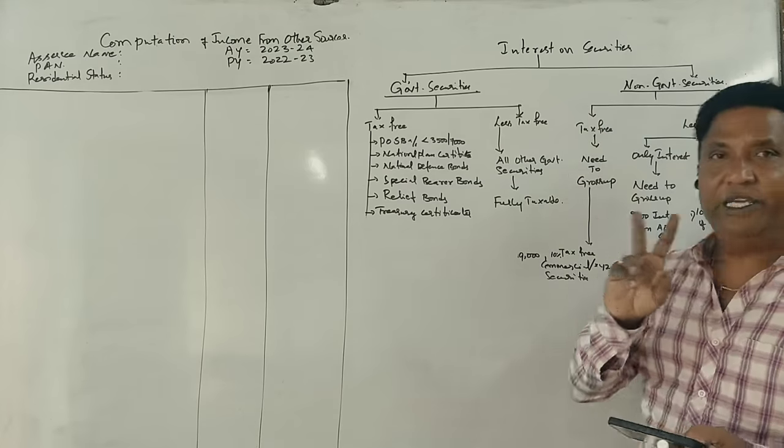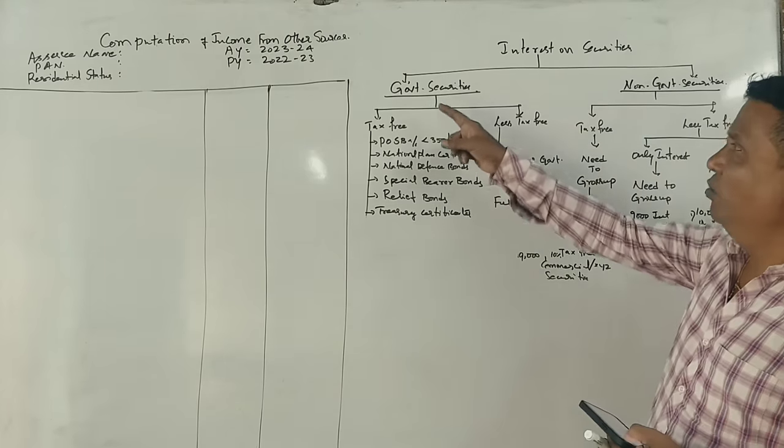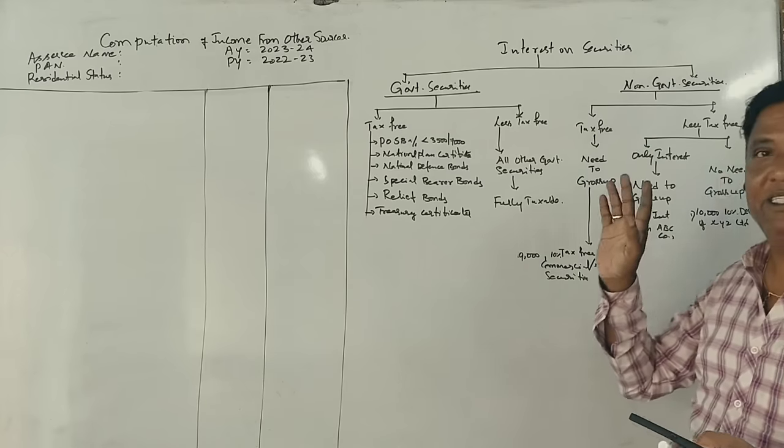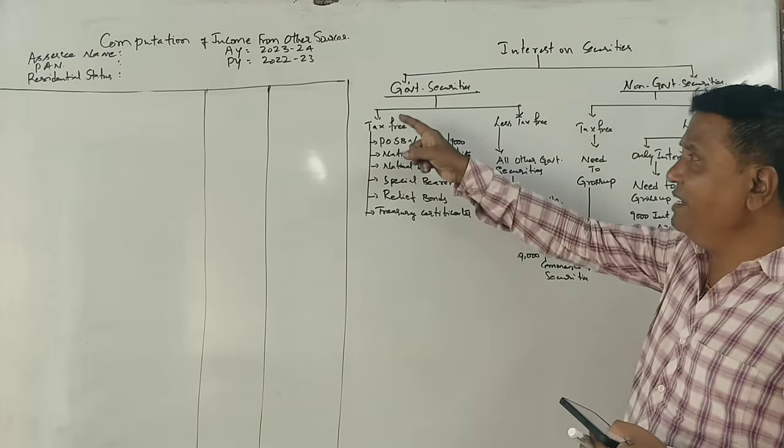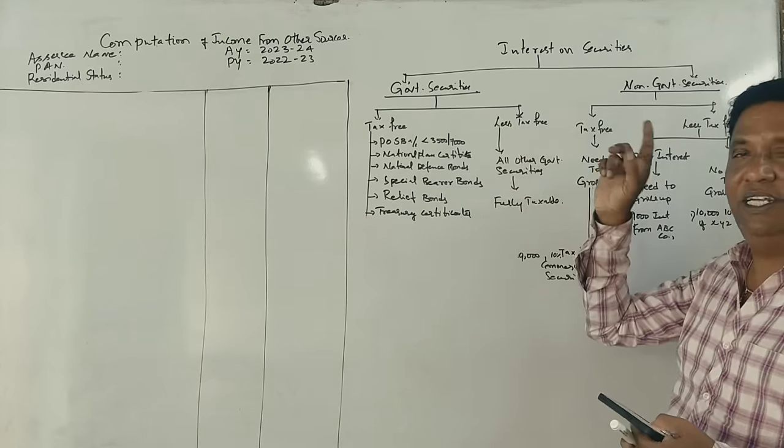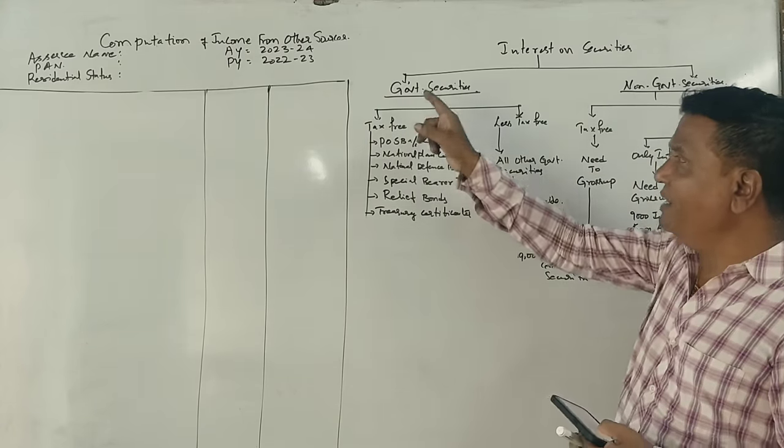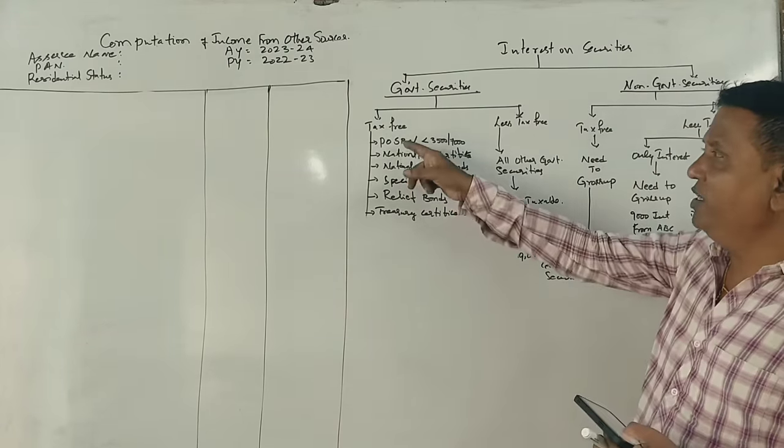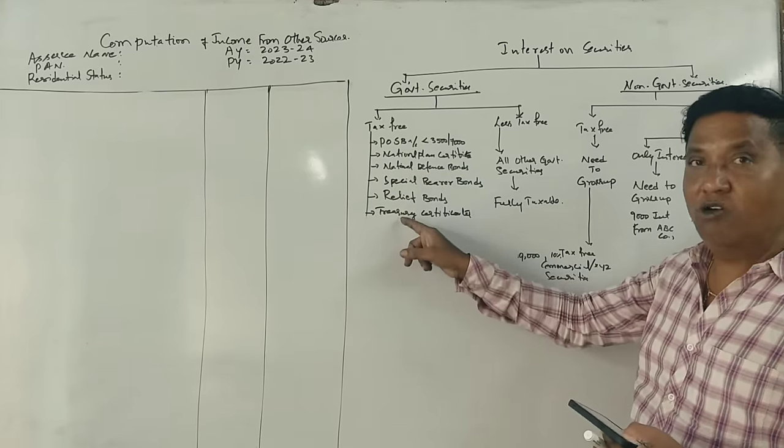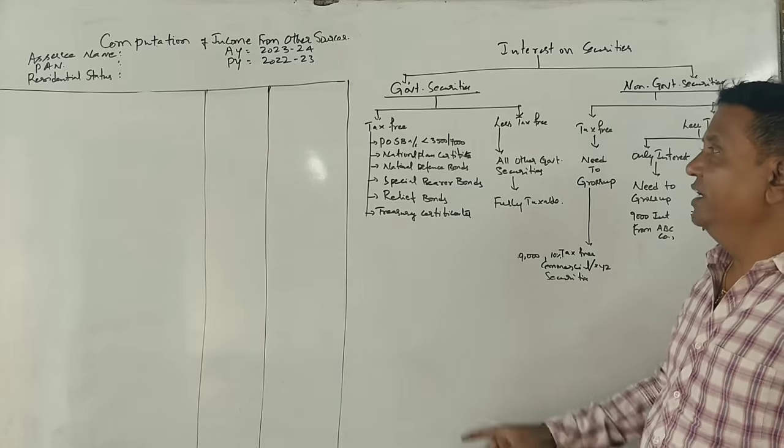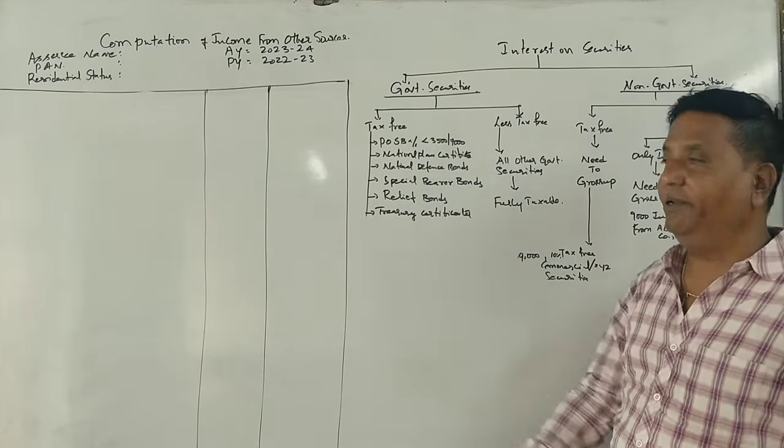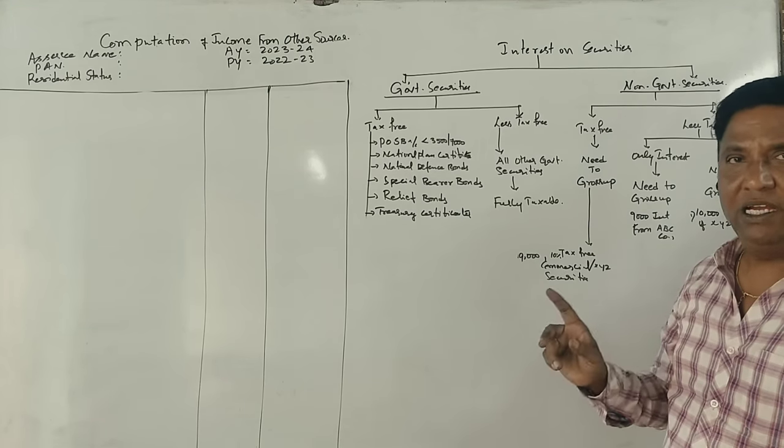One of these securities is government securities, non-government securities, and private securities. Government securities are one of the tax-free securities and less tax-free securities. Tax-free government securities - you can purchase bonds, debentures from government, and the interest amount is exempted. Except the Post Office Savings Bank account.